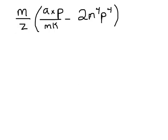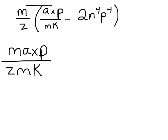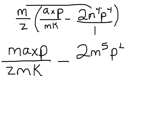Let's work one together. M times AXPM is MAXP over ZMK. And then let's distribute it here, minus 2. Let's make this a fraction. M to the 4th times M is M to the 5th, P to the 4th over 1 times Z is Z. I don't have anything else I can simplify here. This is my final answer.